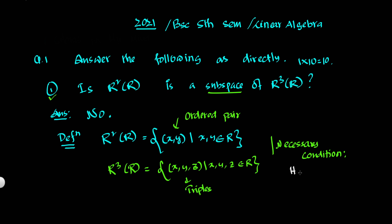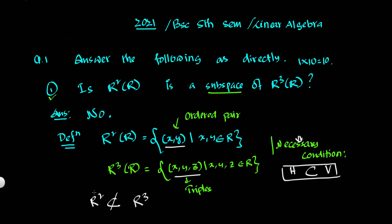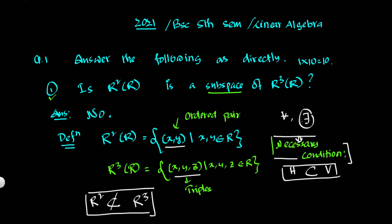For the set of subspace of a vector space, the first condition is it should be a subset of V. We have to directly observe: we can clearly see R² consists of ordered pairs, while R³ consists of ordered triples, so R² is not a subset of R³. Since the necessary condition fails, R² is not a subspace of R³.